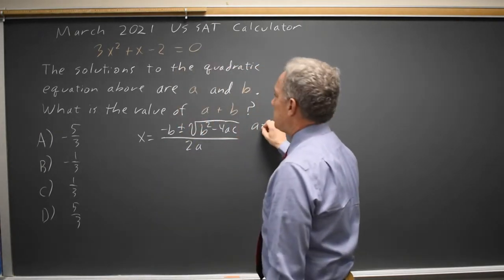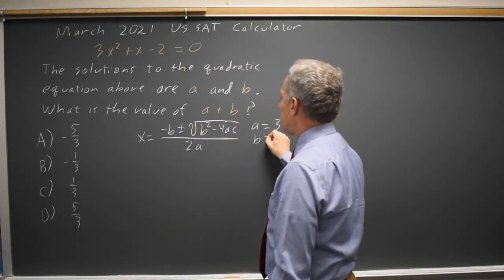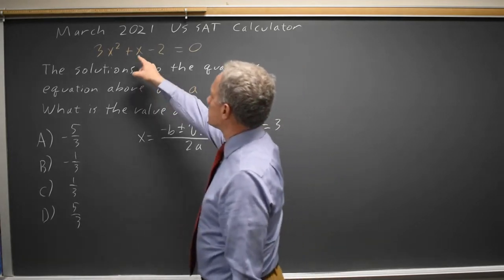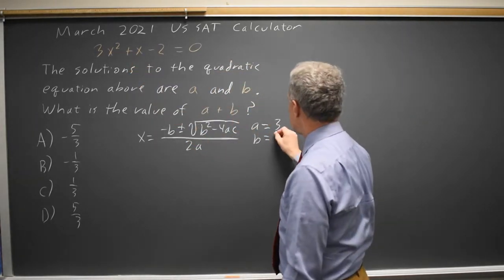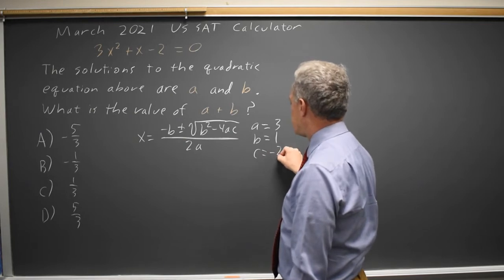Where A equals the quadratic coefficient 3, B equals the linear coefficient, that's plus 1X or B equals positive 1, and C equals the constant, which is negative 2.